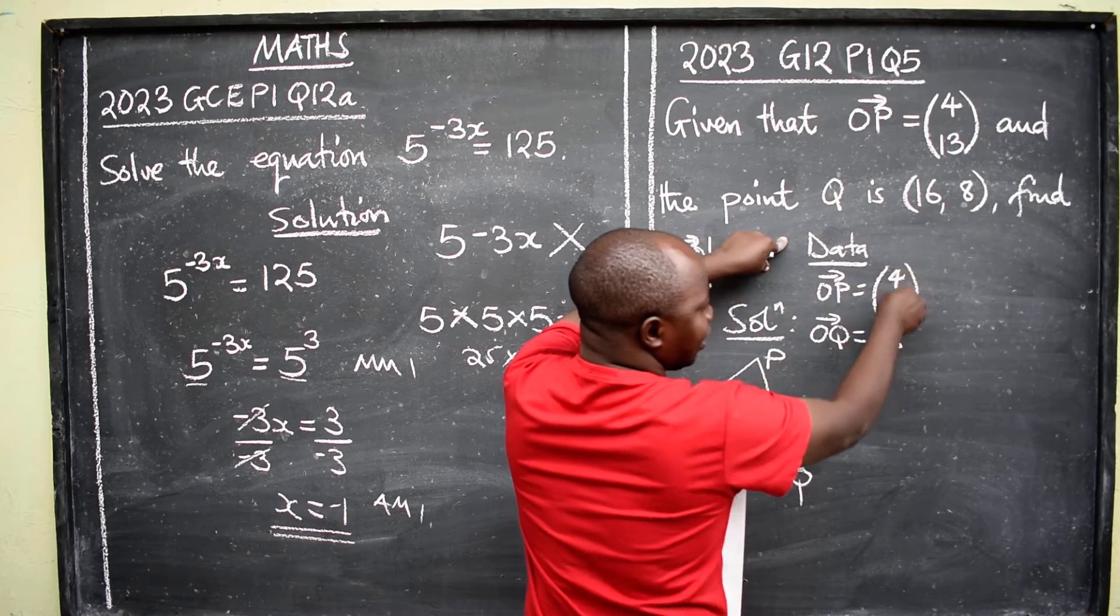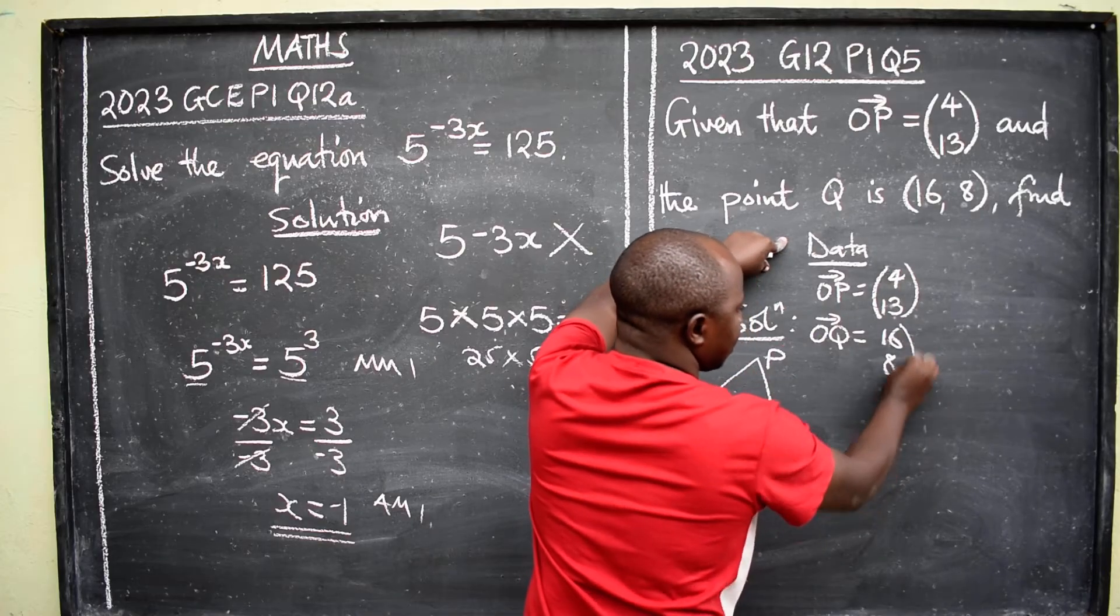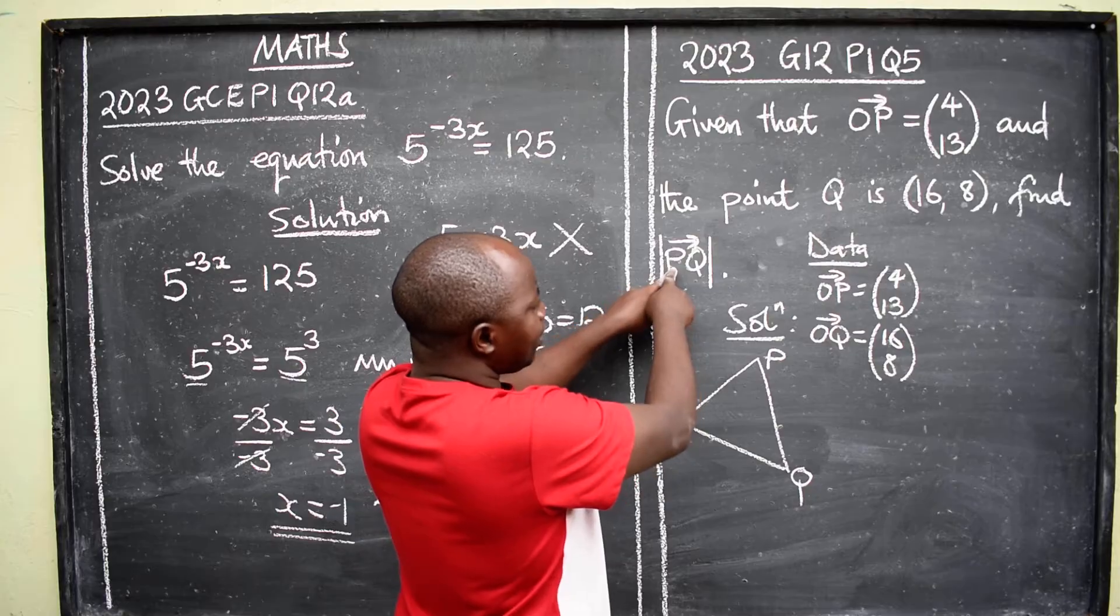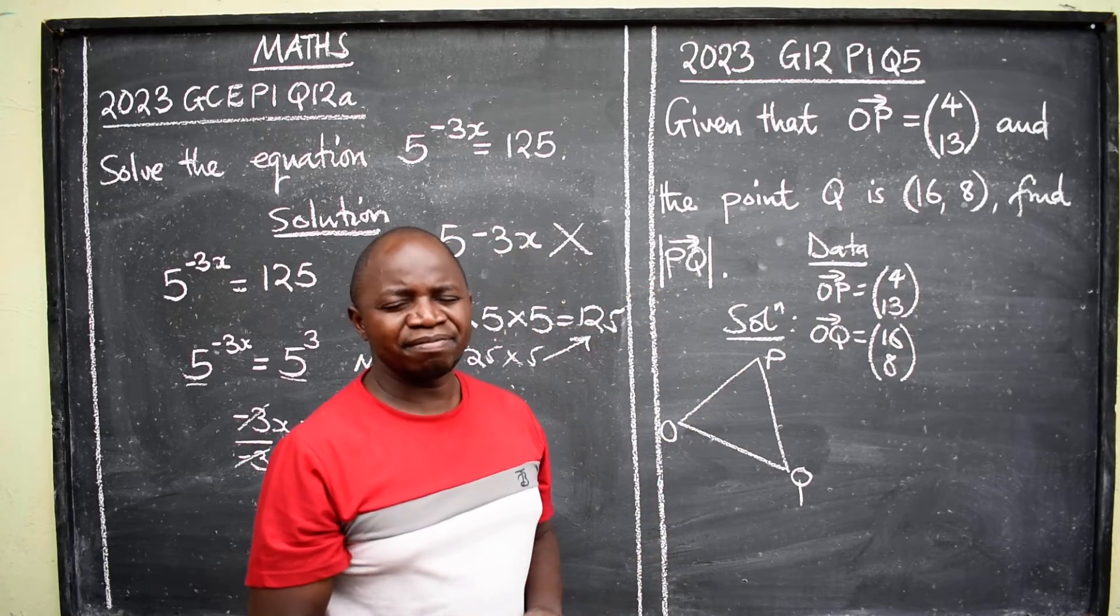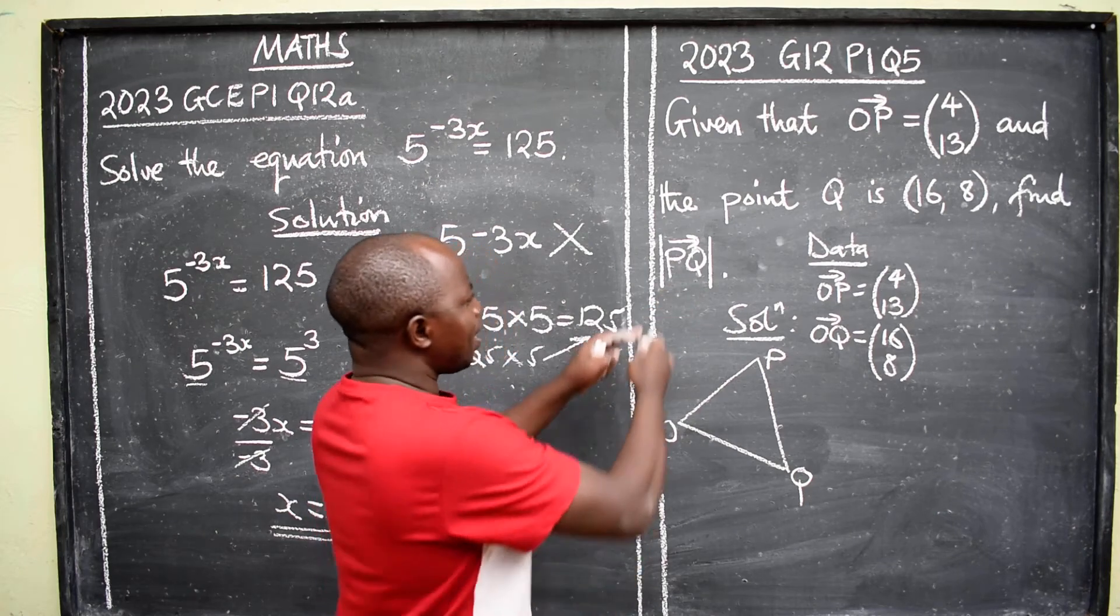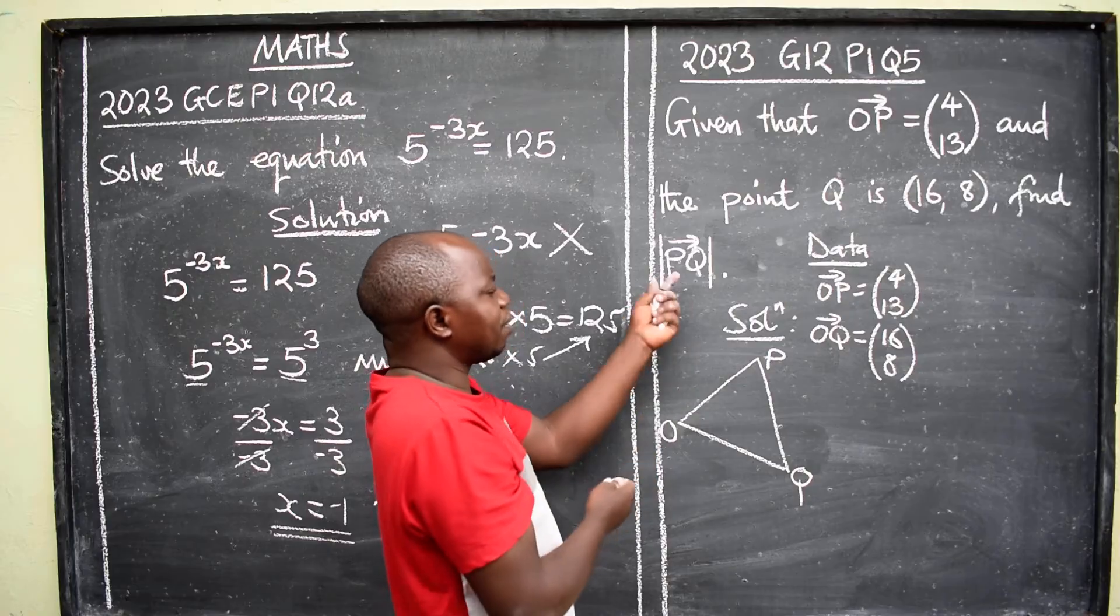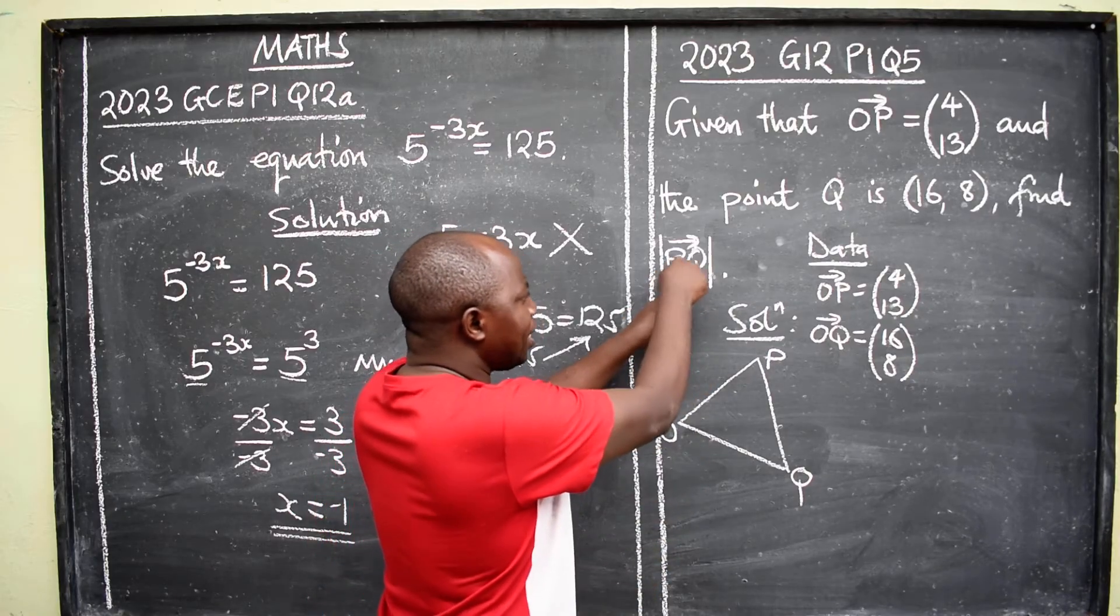The point Q, it means OQ because these are position vectors. So OQ is equal to 16, 8. I can write it in this form, 16 here, 8 down like this. It's the same thing. We want PQ, so this diagram here will help us get PQ. Remember, for you to find the modulus or the magnitude of the vector PQ, the first thing that you need to find is the vector PQ.